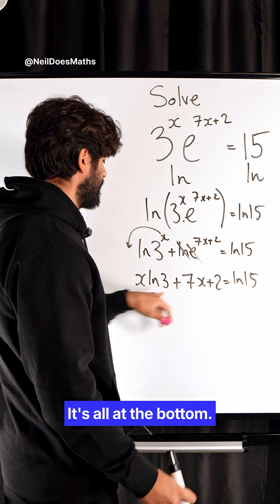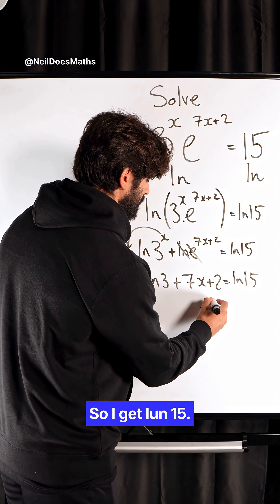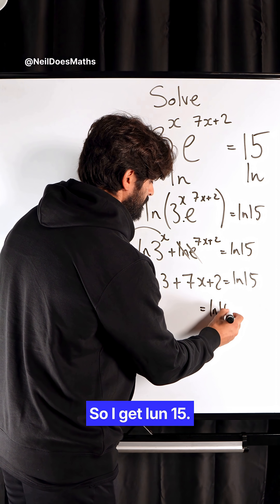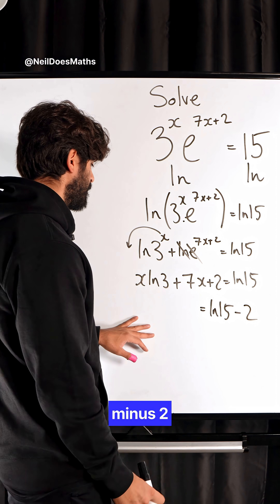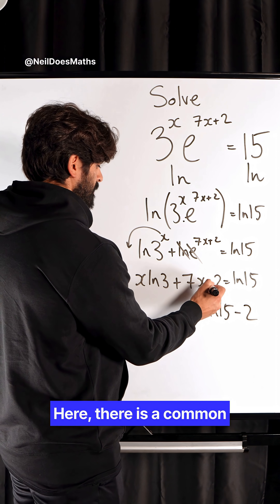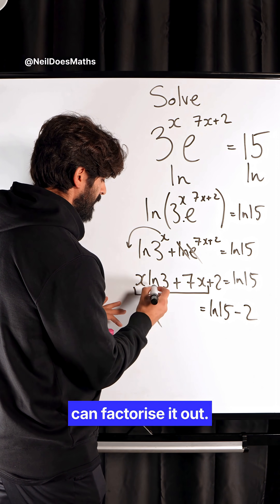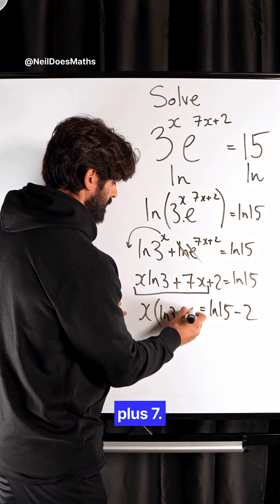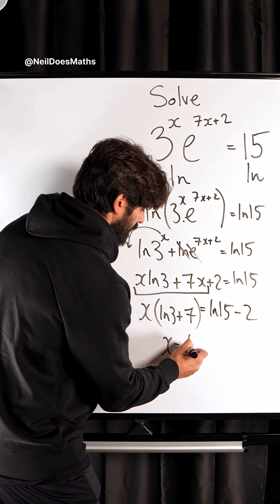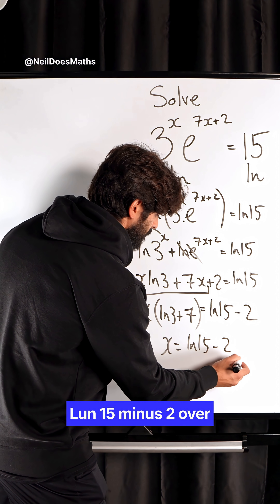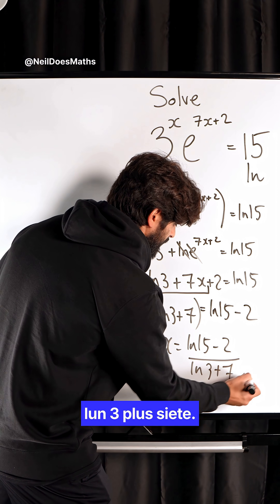And now we can solve for x — it's all at the bottom now. That 2, I can take to the other side. So, I get ln 15 — the plus 2 over here, I'm going to move it to the right — minus 2. Here, there is a common factor of x, so I can factorize it out. I get ln 3 plus 7. And then, finally, divide by the bracket here. And there's our exact answer: ln 15 minus 2, over ln 3 plus 7.